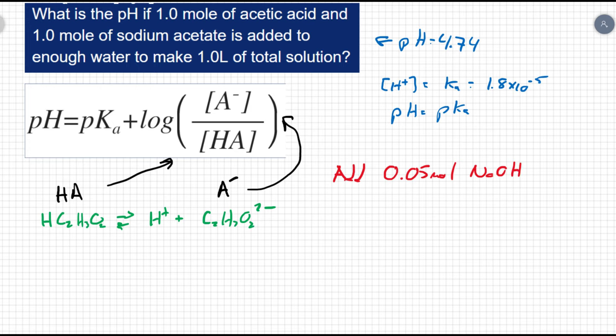So by adding a base, we would expect the pH to go up. But because the solution is buffered, we don't expect it to go up very much. So let's take a look at what happens. Let's go to my ICE chart here. So initial, change, and equilibrium.